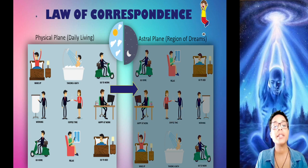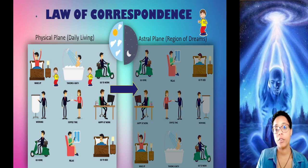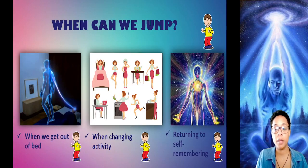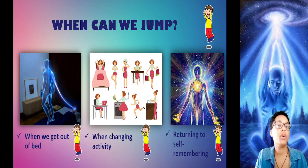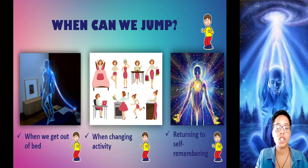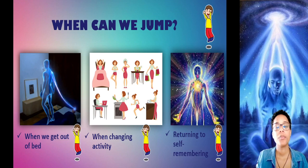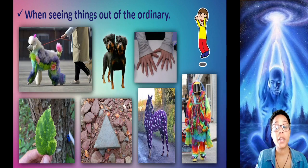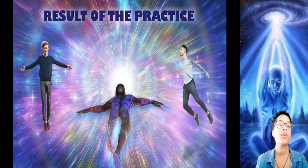By the law of correspondence, at night we will have that same state of attention and self-remembering. So when can we jump during the day? When we get up, for example. When we change activities — we go out of the bathroom and jump, we have breakfast and jump, we get dressed and jump, we cook and jump, we get home from work and jump, after the shower, after dinner, and so on. We can also jump when we remember ourselves — that moment when consciousness calls us to the present moment. Also if we see anything that seems strange to us on the street, we can jump. If a person wants to unfold this very night, all they have to do is repeat the jump after each activity during the day.